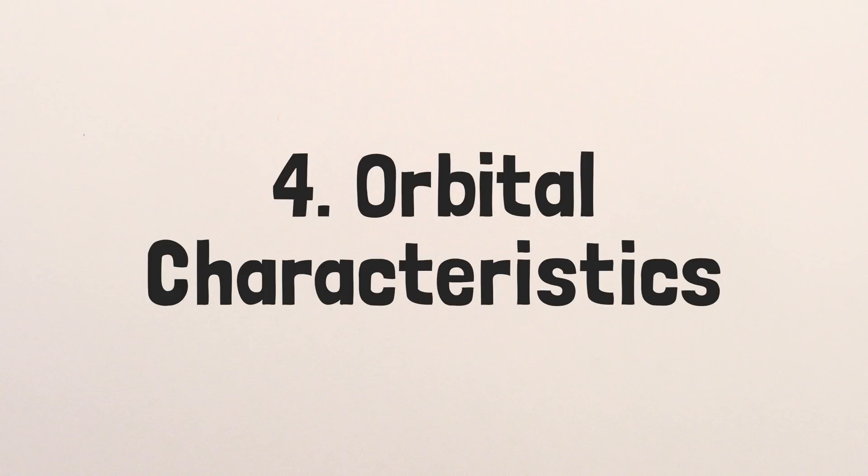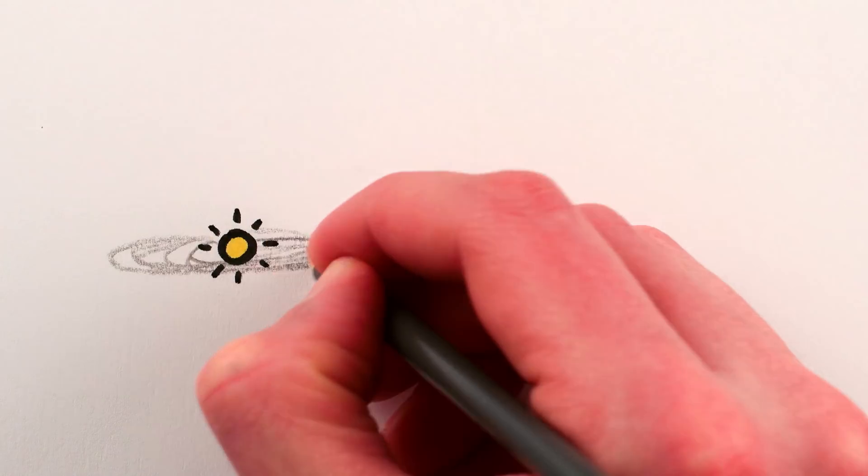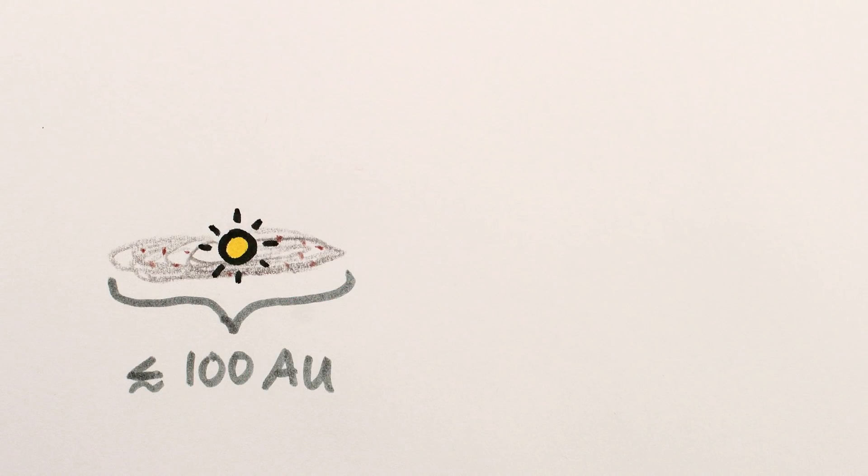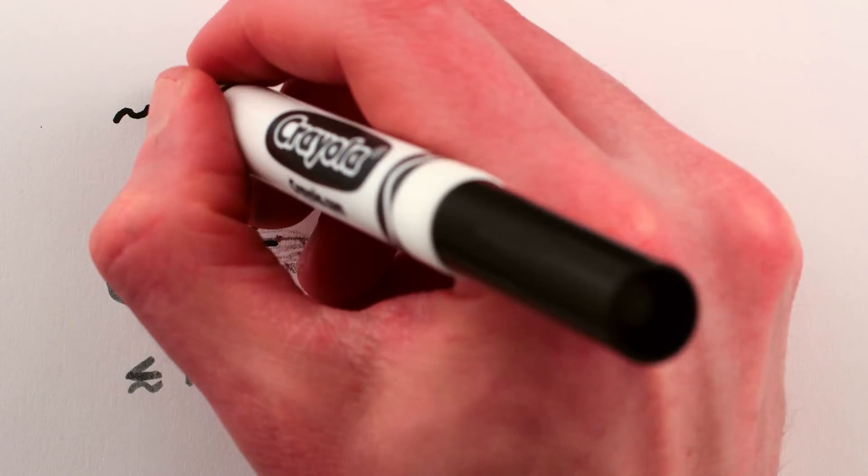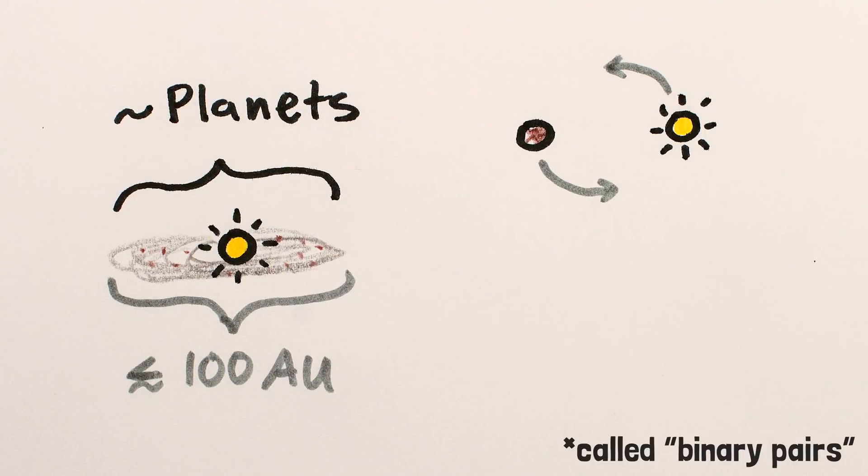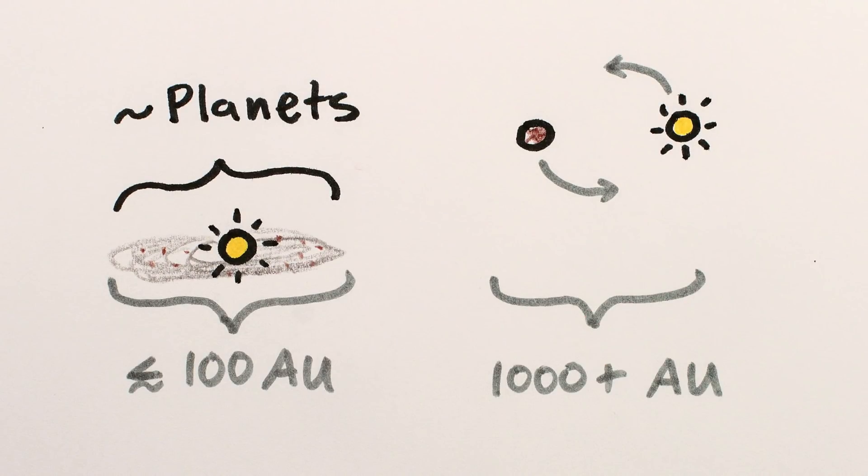4. The size of orbits. Protoplanetary disks around stars typically don't extend much farther than a few hundred times the distance between the Earth and the Sun, so that's about as far out as you find planets. However, brown dwarfs often orbit stars or other brown dwarfs at significantly greater distances.